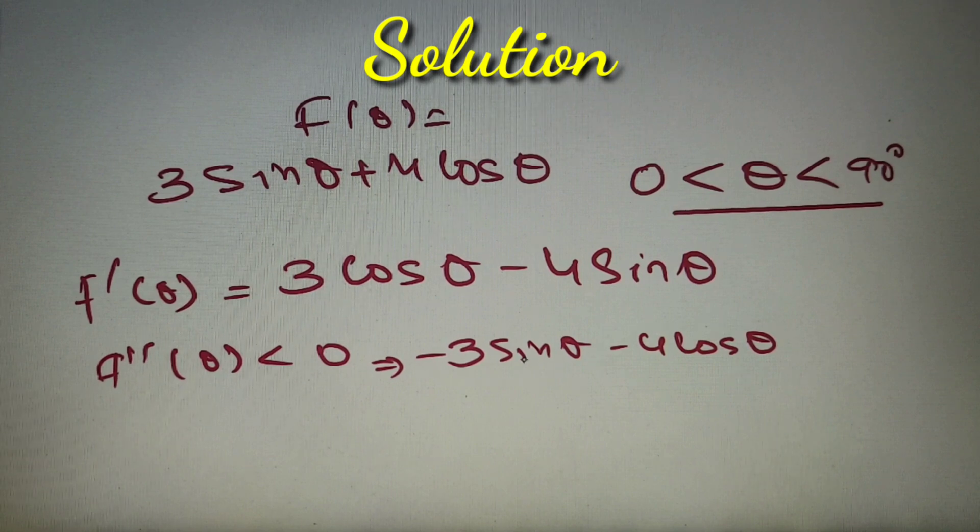So negative into positive plus negative into positive is always a negative quantity. So we have got that f double dash theta is definitely negative, so we will get the maxima at this point.